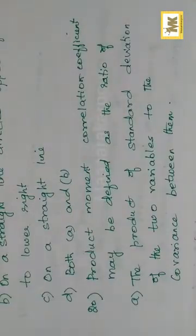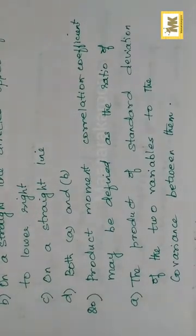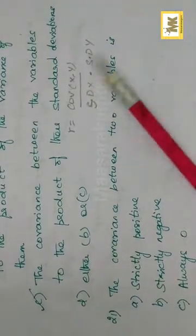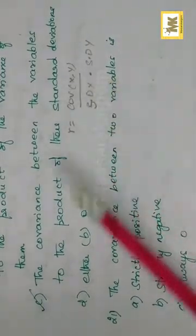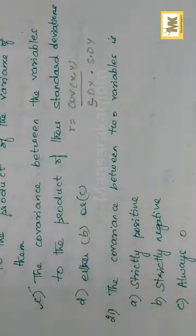Product moment correlation coefficient may be defined as the ratio of the covariance of X and Y divided by the standard deviation of X multiplied by the standard deviation of Y. It is the ratio between the covariance between the variables to the product of their standard deviations.